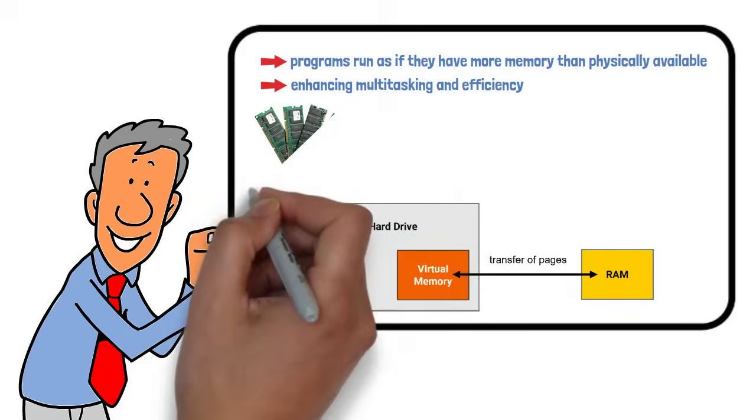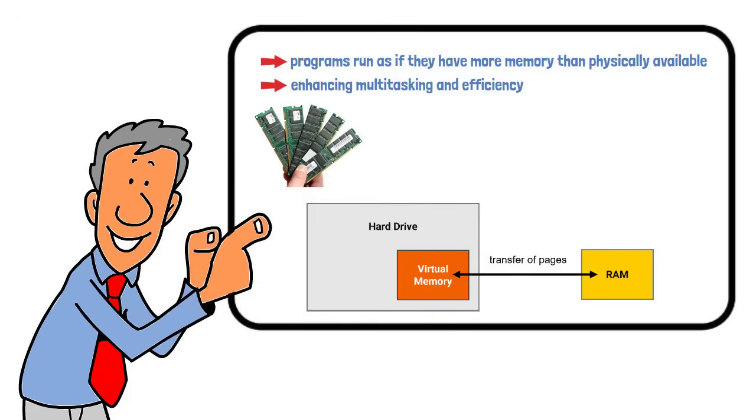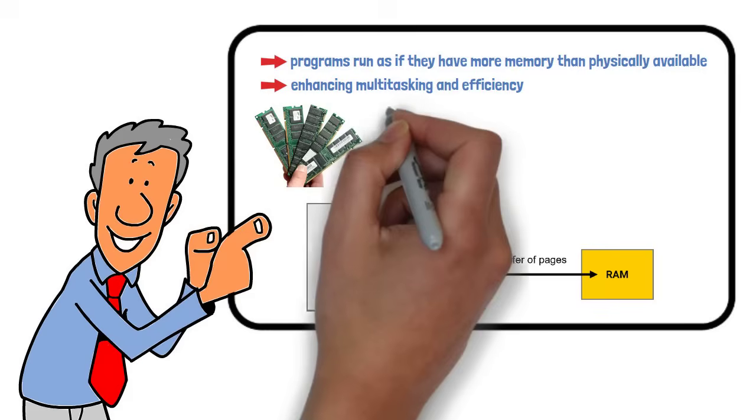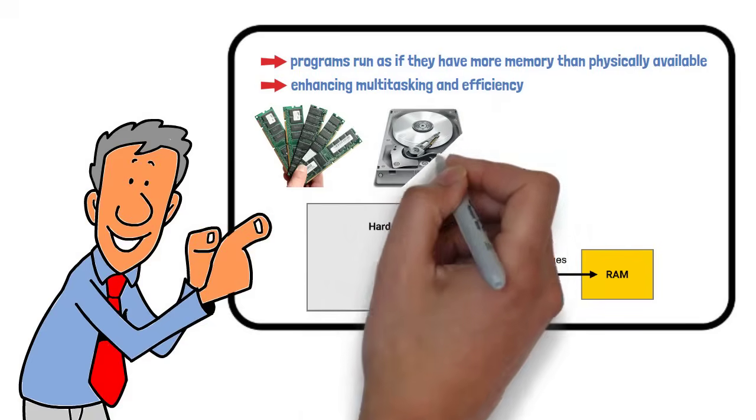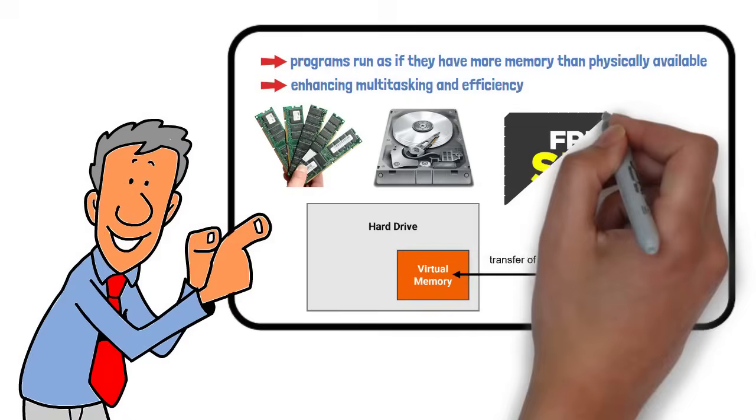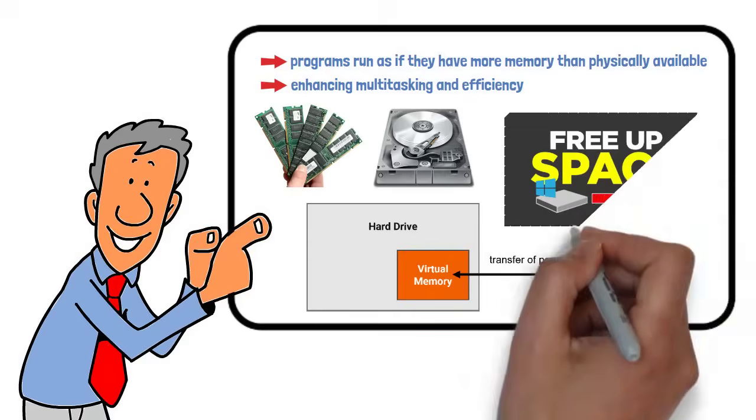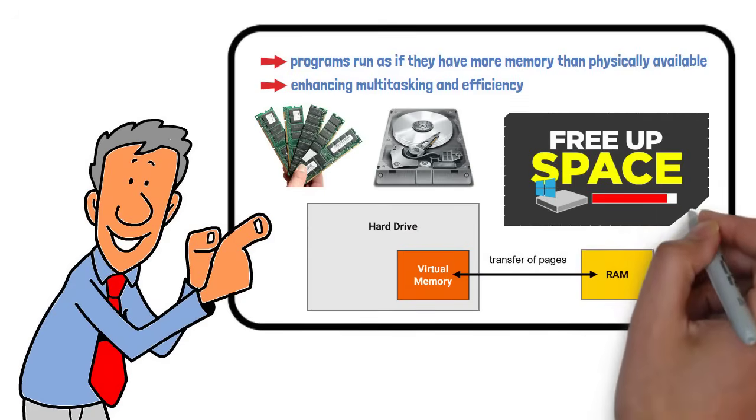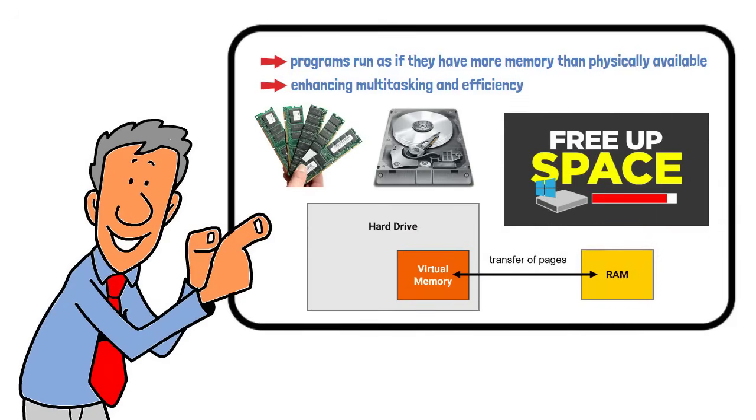It's like having a small desk, RAM, but a large filing cabinet nearby, your hard drive. When your desk gets full, you can temporarily move some papers to the cabinet, freeing up desk space for urgent work. This creates the illusion of having a much larger workspace than your actual desk.